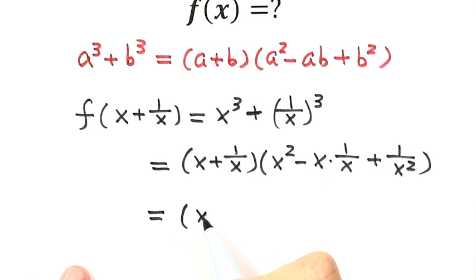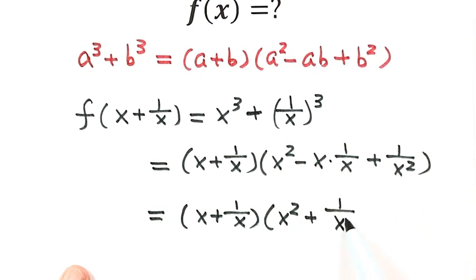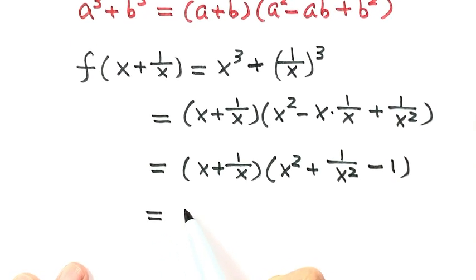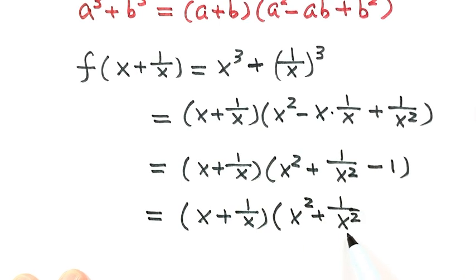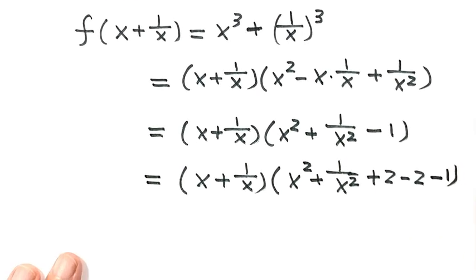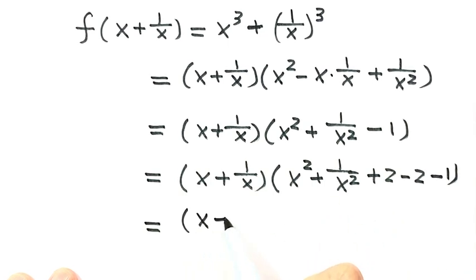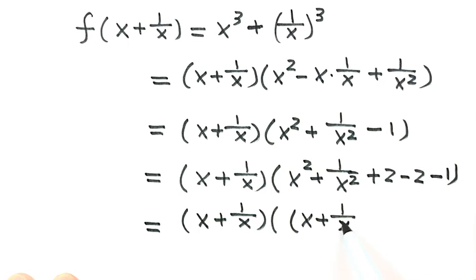Let's simplify this part. Here we have x plus 1 over x, and x and x cancel, so here just minus 1. Next, we work on the second part: we have x squared plus 1 over x squared. To make a complete square, we add 2 then subtract 2, then subtract 1. So these three terms make a complete square, which is x plus 1 over x, the whole thing squared. Combining these two, that's minus 3.